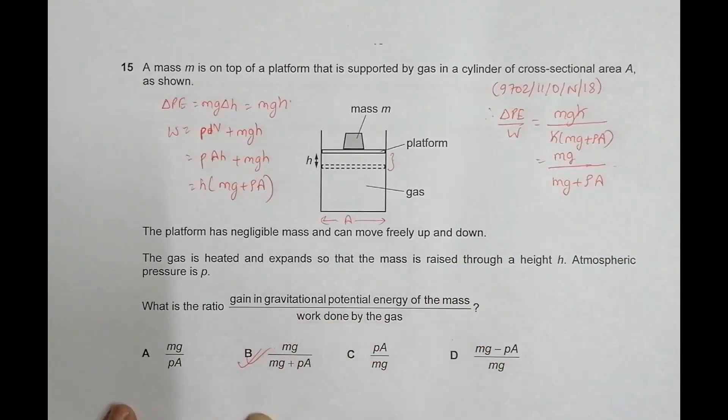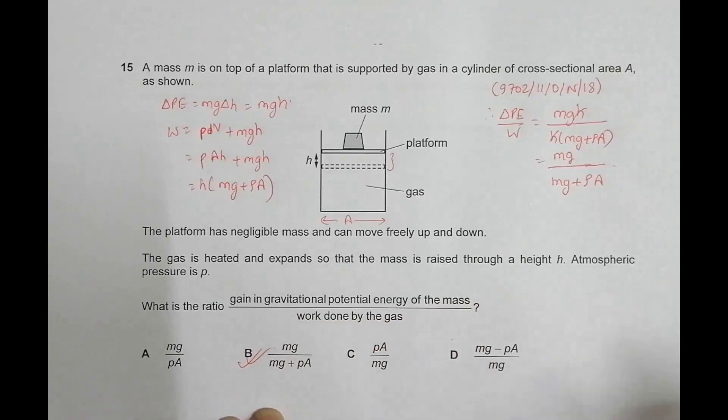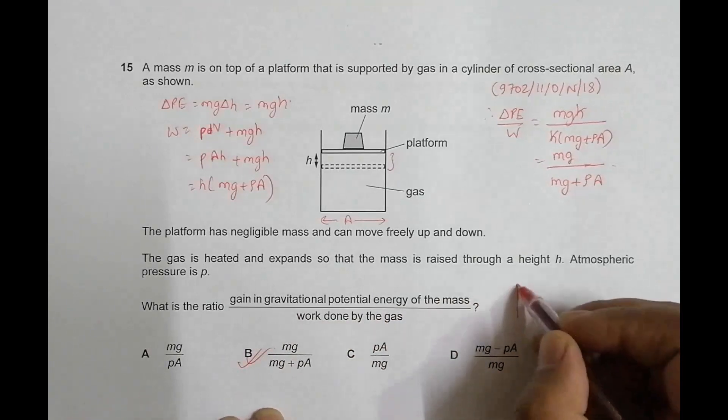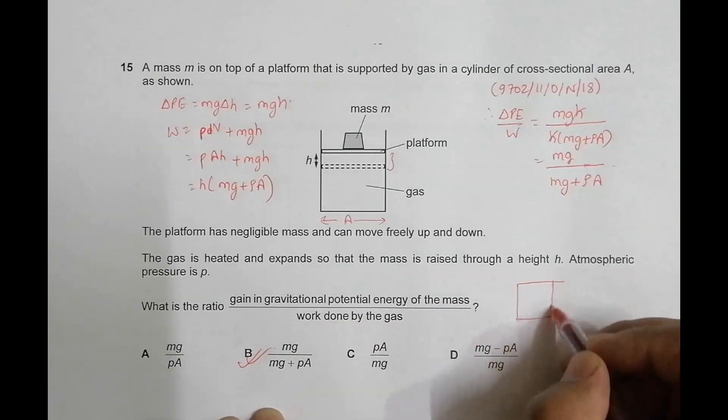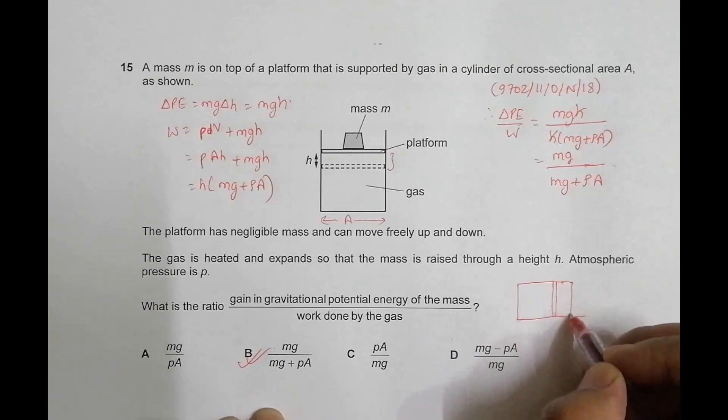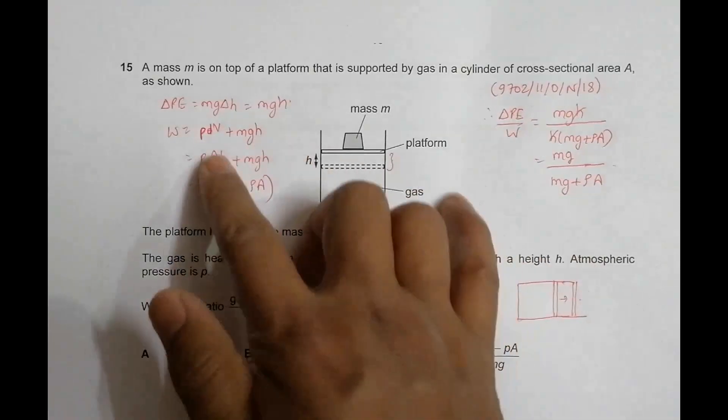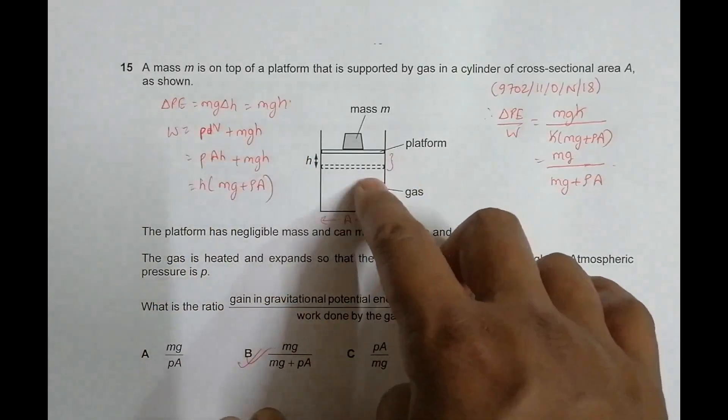One thing we have to remember is: if this vessel had been like this, and this is the piston which expands from here to here, then the work done should simply be P into dV. But here it is P dV plus mgh because it has to overcome the gravitational attraction as well.